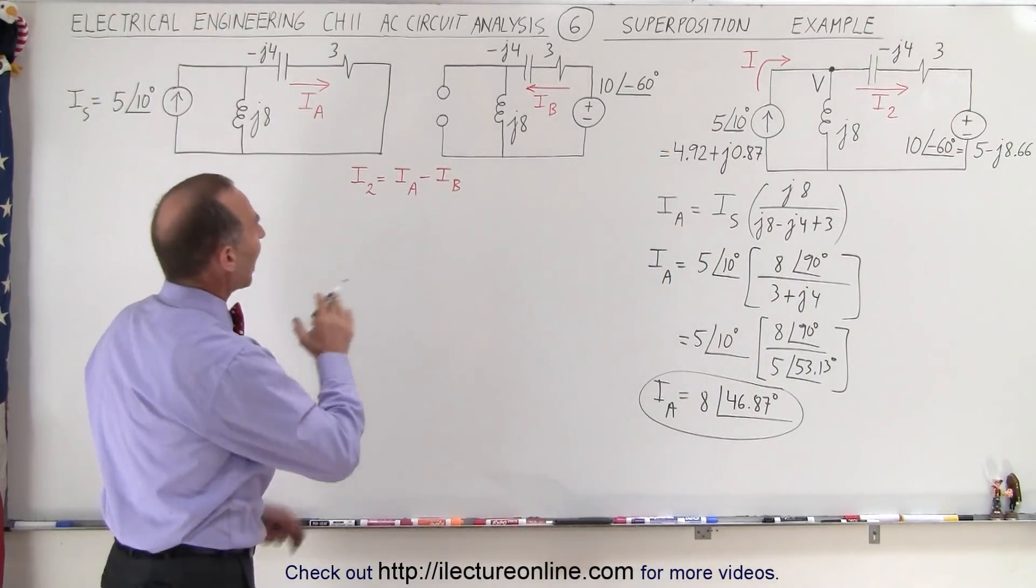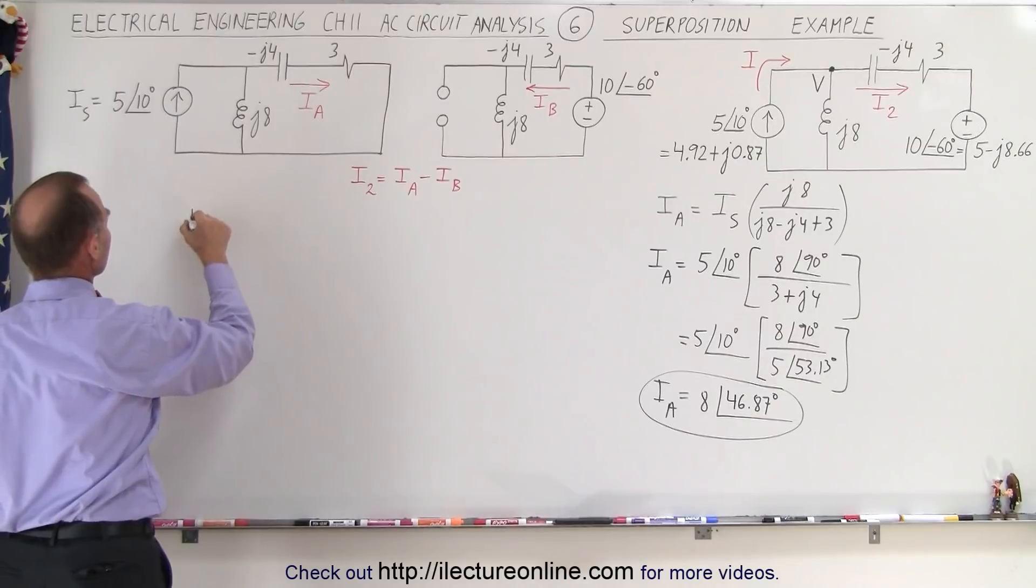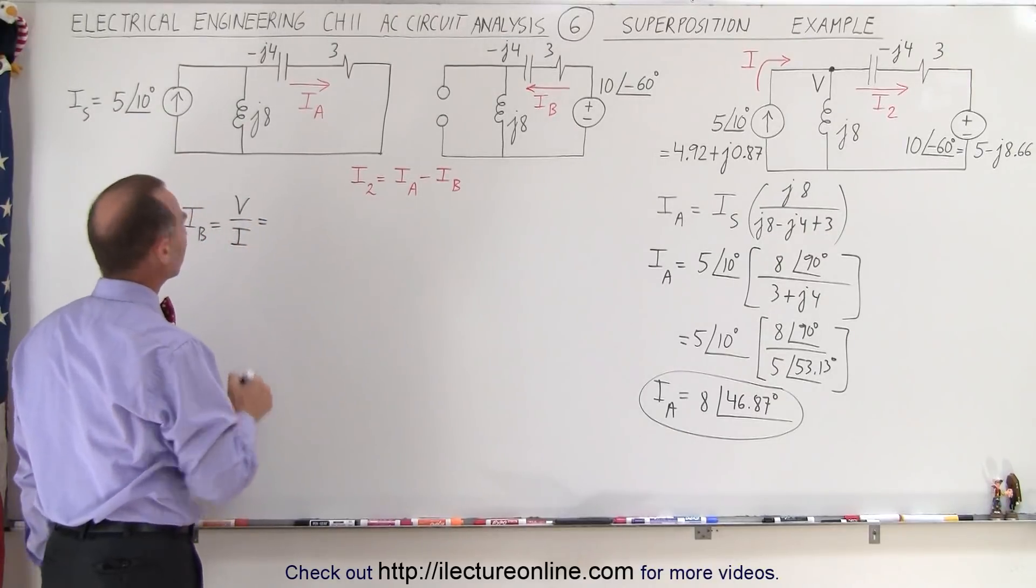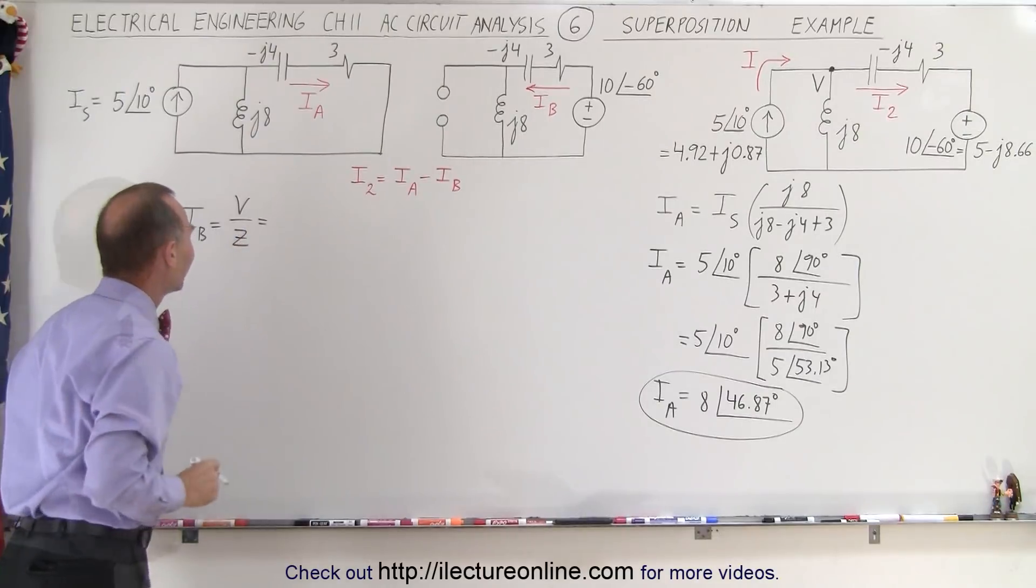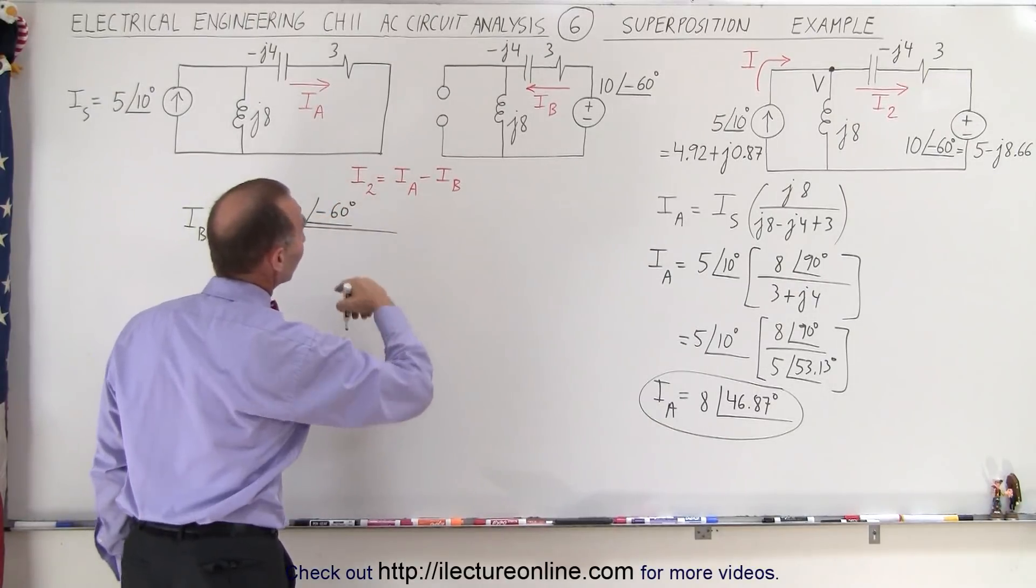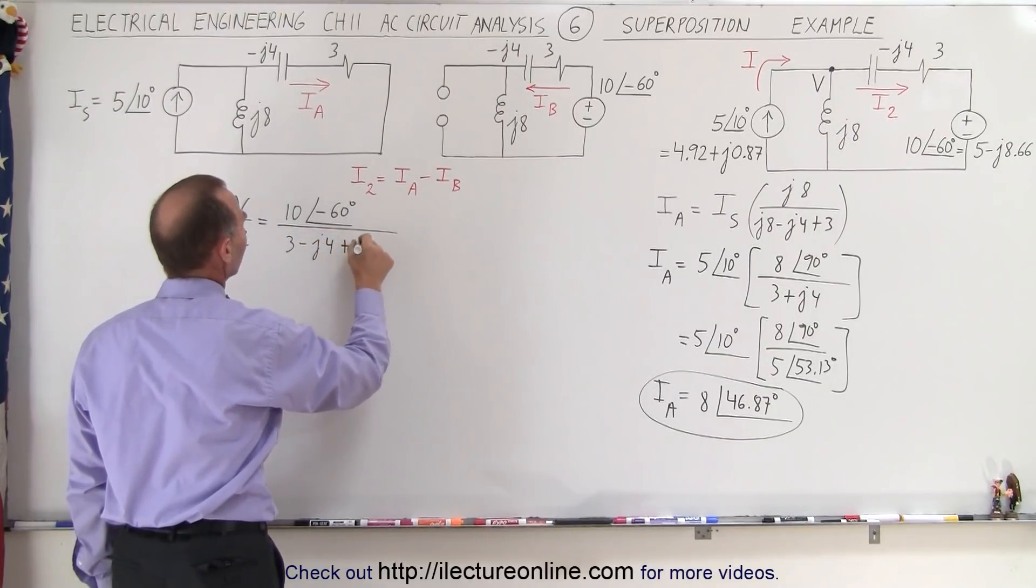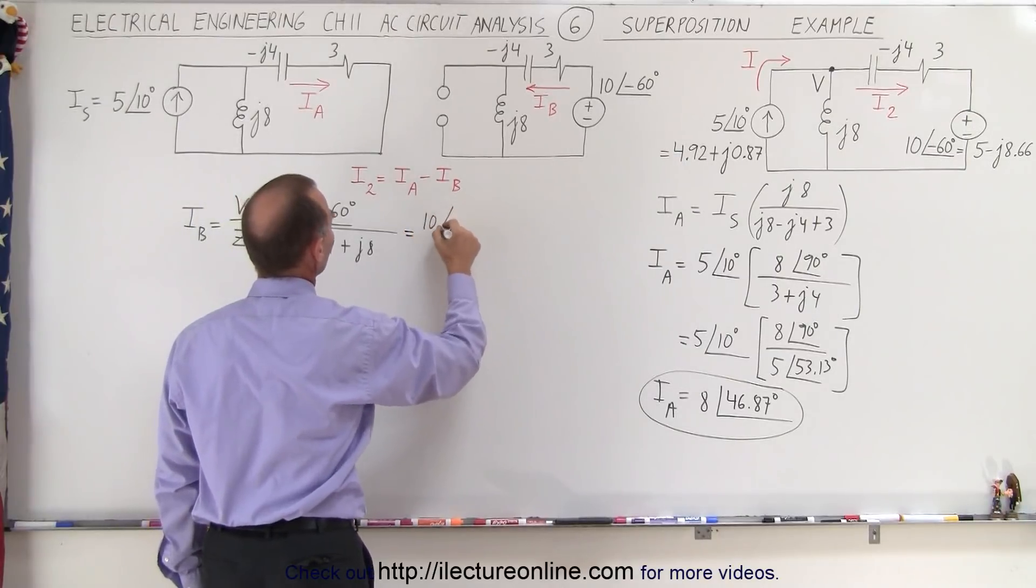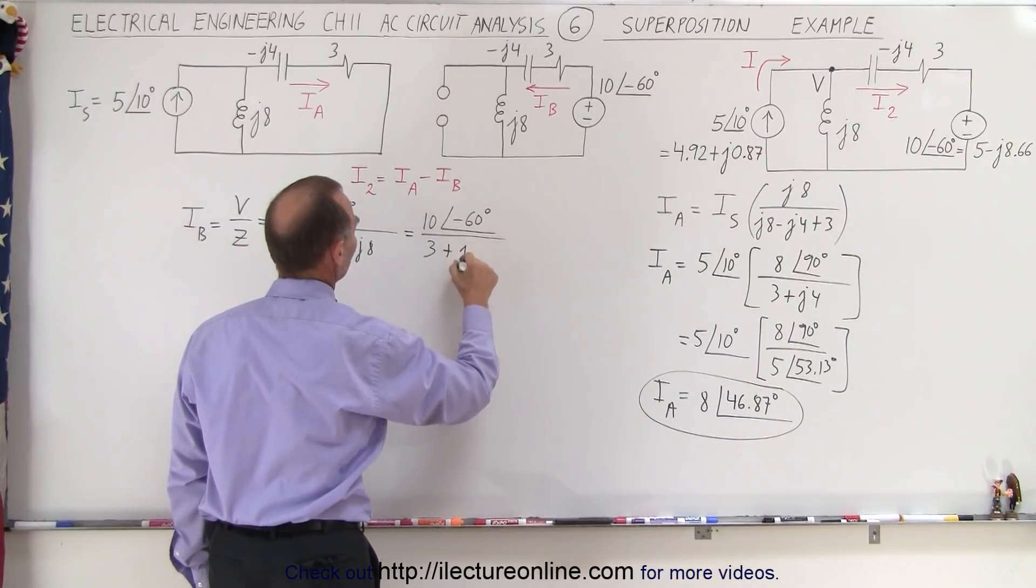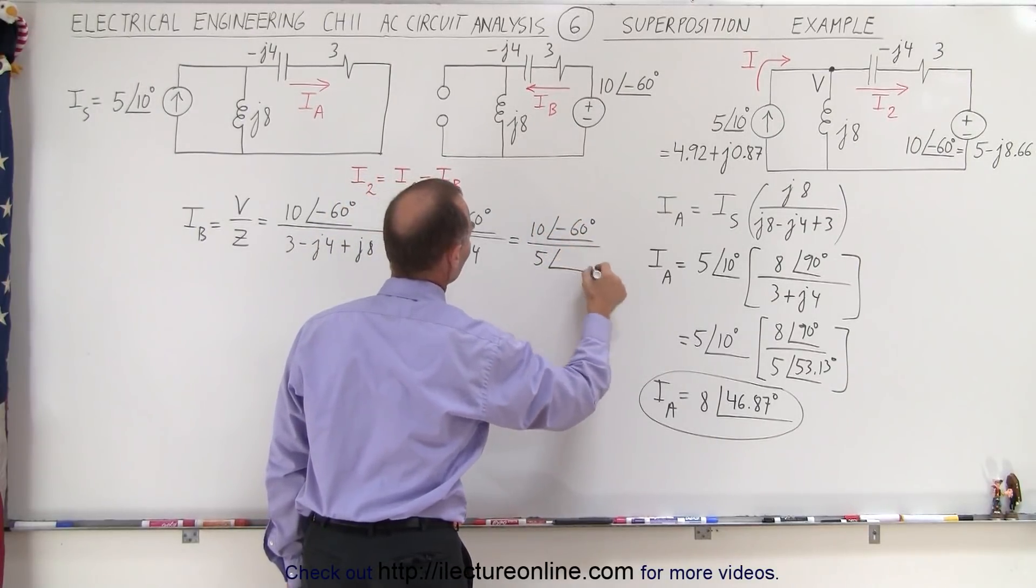So now we need to find current IB and there we simply have a single loop, we have a voltage source. So there we can say that I sub B is equal to the voltage divided by impedance. That gives us 10 with a phase angle of minus 60 degrees divided by the total impedance, so we add everything up, so it gives us 3 minus J4 plus J8. So this is equal to 10 with a phase angle of minus 60 degrees divided by this will give us 3 plus J4, which is 10 with a phase angle of minus 60 degrees divided by 5 with a phase angle of 53.13 degrees.